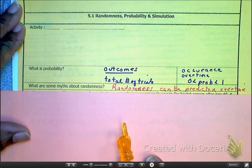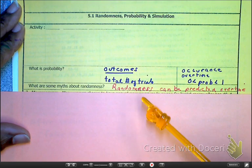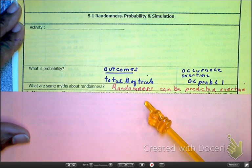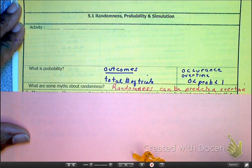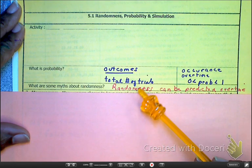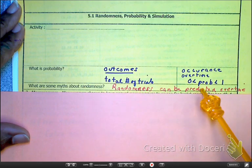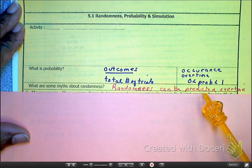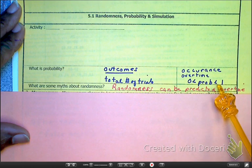So, we already know probability is just outcome over total number of trials. The probability of getting a one on a dice out of six sides, one out of the six. Probability is also occurrence over time. And we know the probability is going to be always between zero and one.